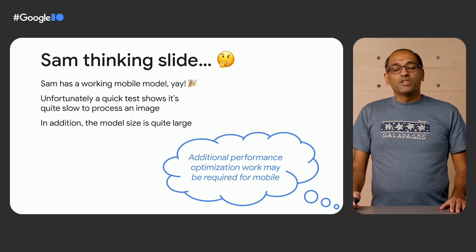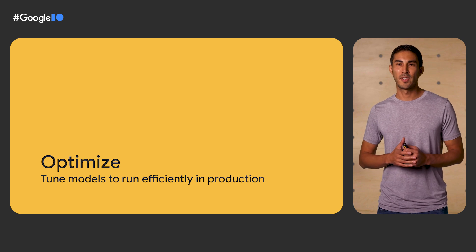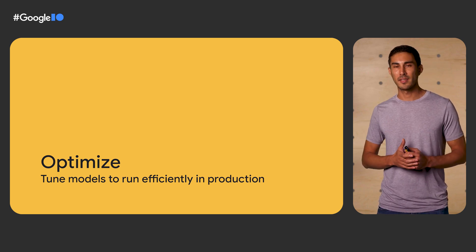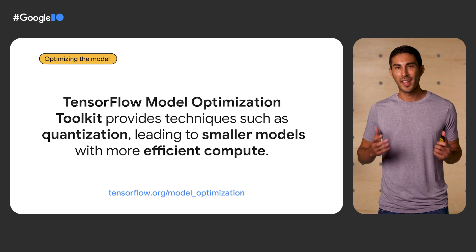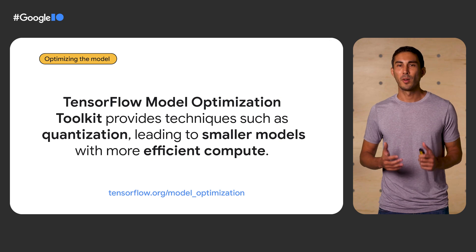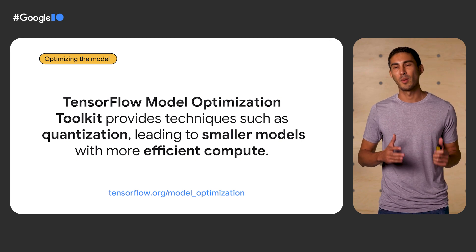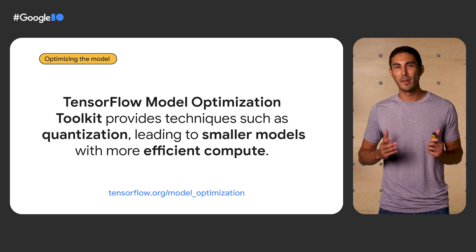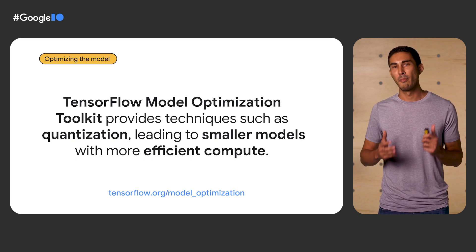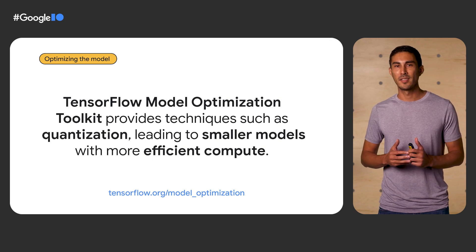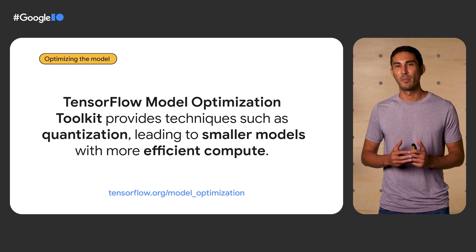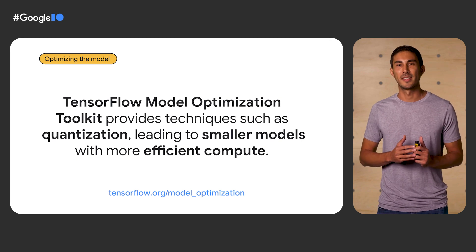Sam now needs to tune the model to run efficiently — a key step when preparing a custom model for production. We provide the TensorFlow Model Optimization Toolkit, which provides techniques such as quantization that lead to smaller models with more efficient compute. This is really important for on-device use cases like mobile that inherently have limitations on resources such as compute, memory, and battery. However, these advantages need to be balanced against model quality, so it's important for Sam to measure and benchmark the model to understand the tradeoffs.